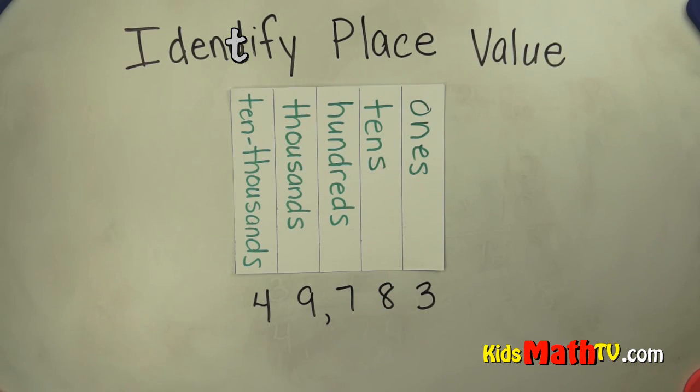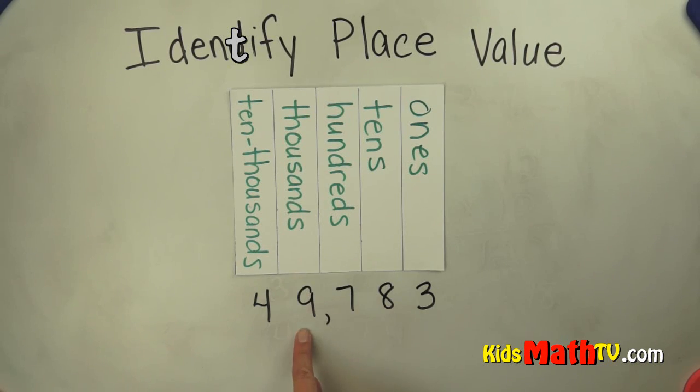I could also ask what numeral, what digit, is in the thousands place? So I find the thousands place, then nine is the digit that's in the thousands. So this is worth nine thousands, or nine thousand.